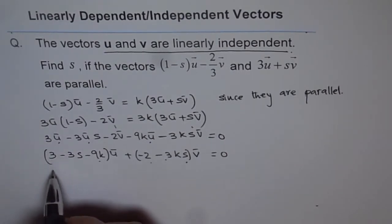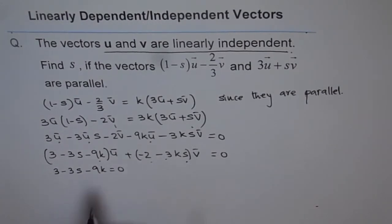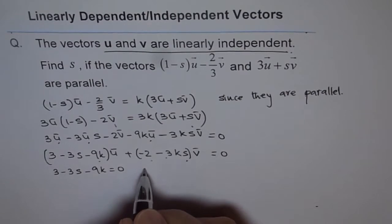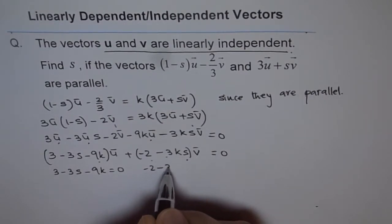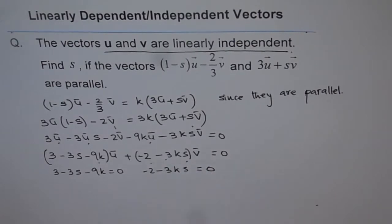Now, we have 3 - 3s - 9k equals to 0. And also, we have minus 2 - 3ks equals to 0. So, we get these two conditions from here.